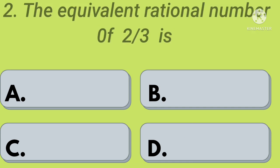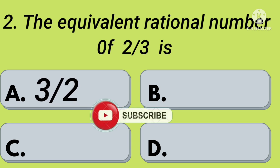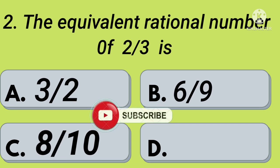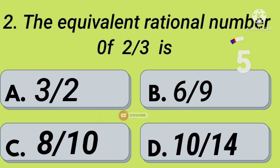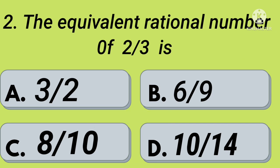Second question: the equivalent rational number of 2 by 3 is — option A: 3 by 2, option B: 6 by 9, option C: 8 by 10, option D: 10 by 14. Your time starts now. Right, option B: 6 by 9.